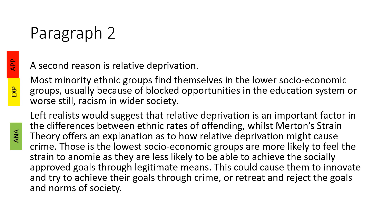Paragraph two: a second reason is relative deprivation — another left realist approach. Most minority ethnic groups find themselves in lower socioeconomic groups, usually because of blocked opportunities in the education system, or racism in wider society. Left realists would suggest that relative deprivation is an important factor in the differences between ethnic rates of offending, whilst Merton's strain theory offers an explanation of how relative deprivation might cause crime. Those in lower socioeconomic groups are more likely to feel a strain to anomie, as they are less able to achieve socially approved goals through legitimate means — causing them to innovate through crime, or retreat and reject society's goals and norms.